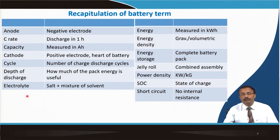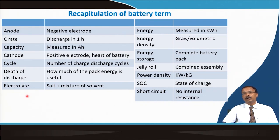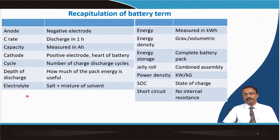The C-rate is important: if you can charge your battery in one hour, you are charging at 1C rate. If you can charge it in 6 minutes, the charging rate is 10C.